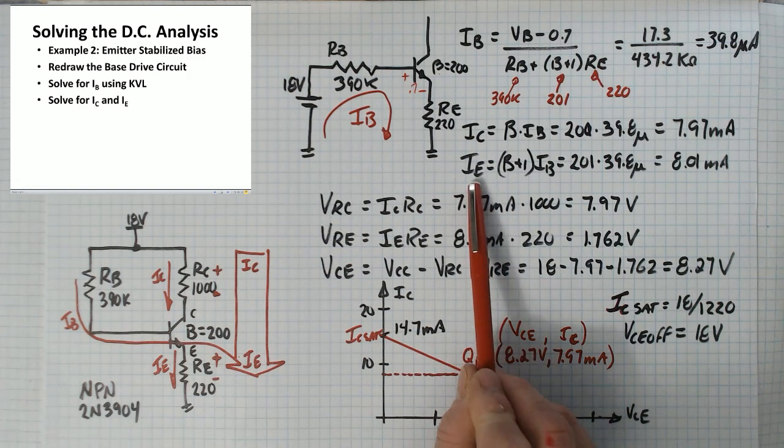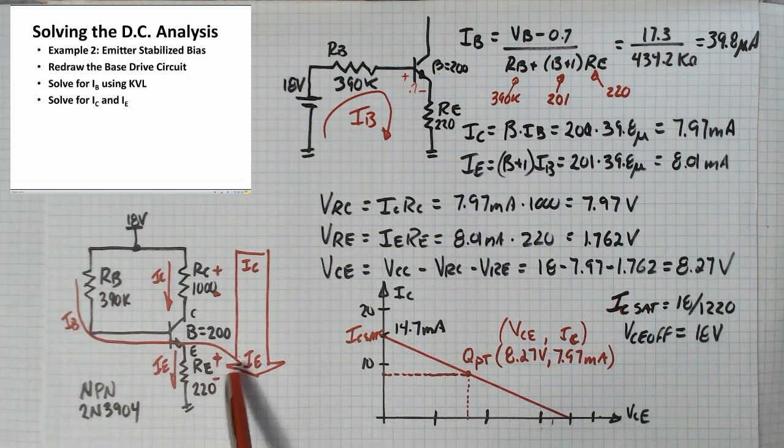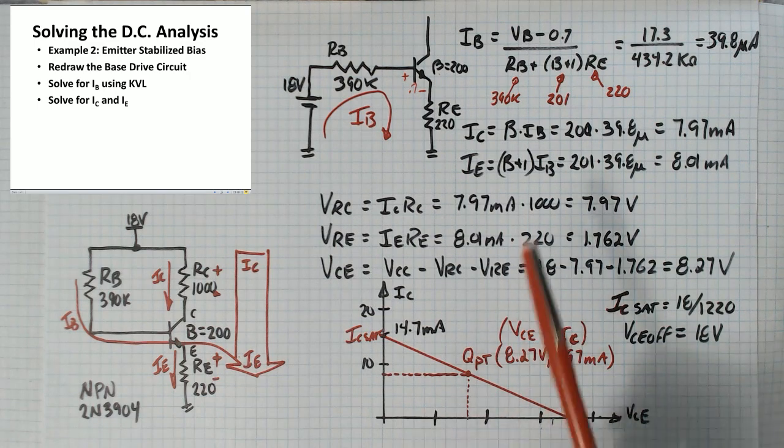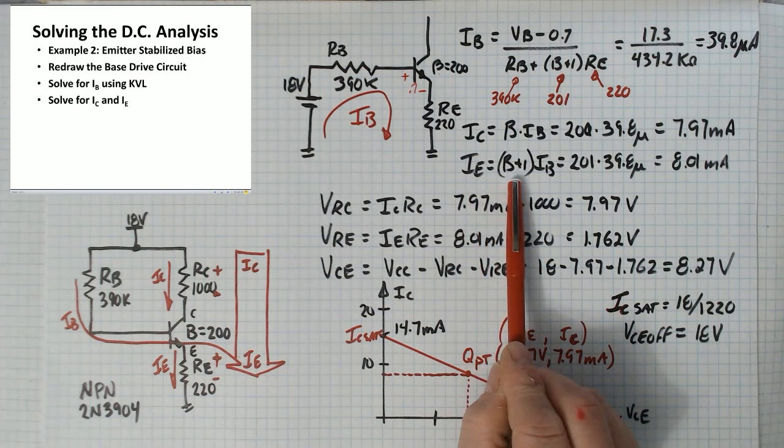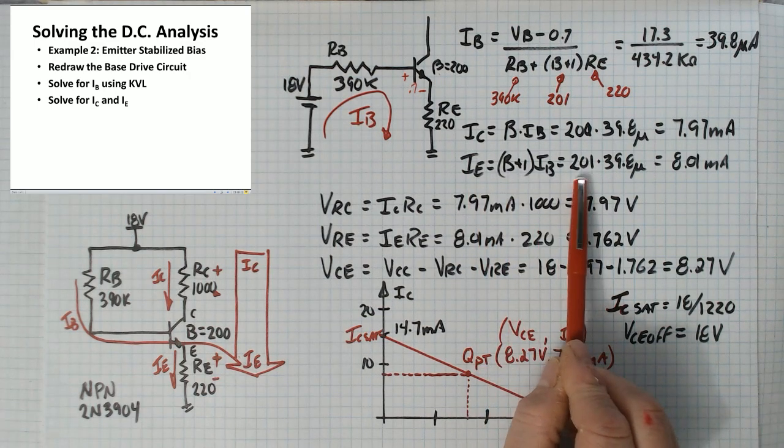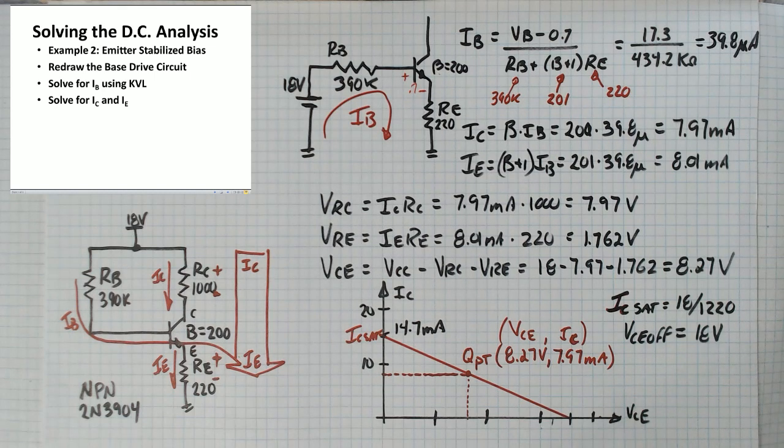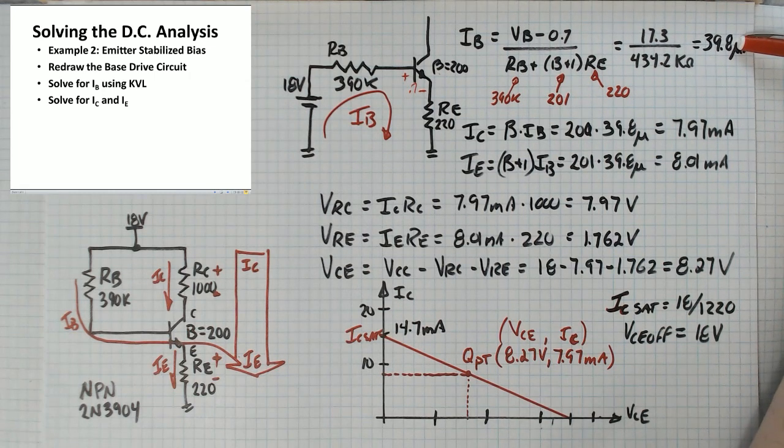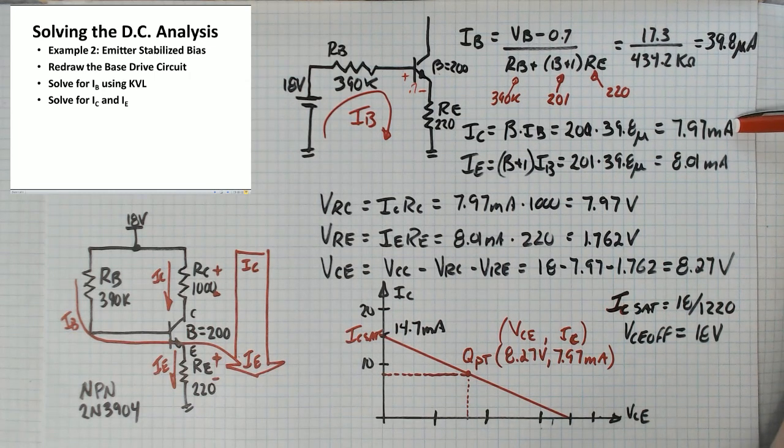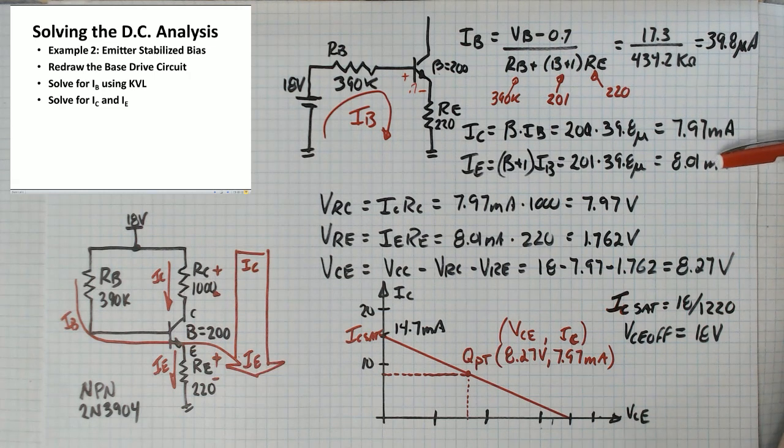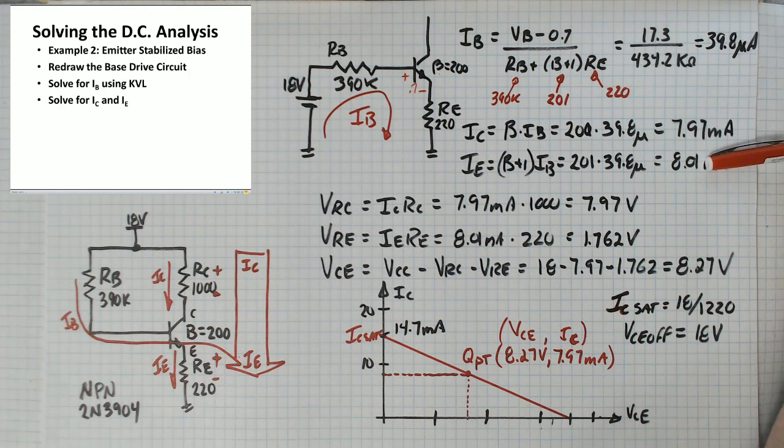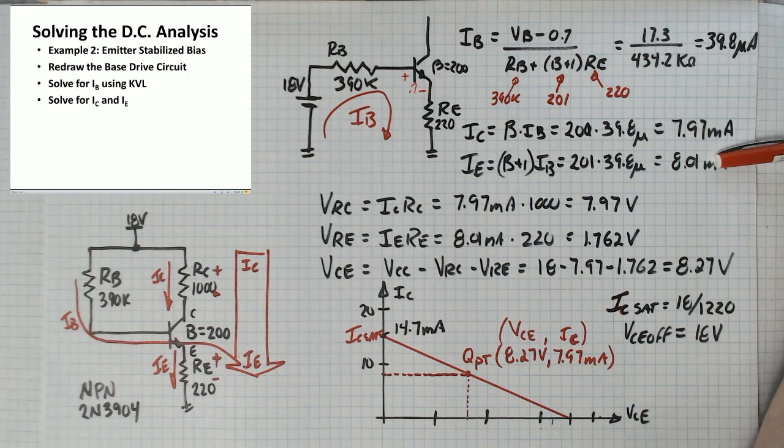The emitter current is a little larger because it includes one extra base current. So it's beta plus 1 times IB which is 201 times 40 microamps or 8.01 milliamps. If you'll look at these numbers you can see that this is 0.04 milliamps plus 7.97 so that gives you 8.01 milliamps. This plus this gives you the emitter current.